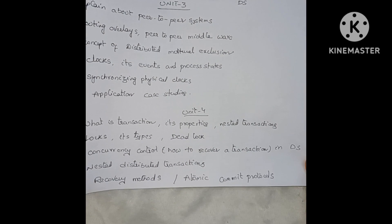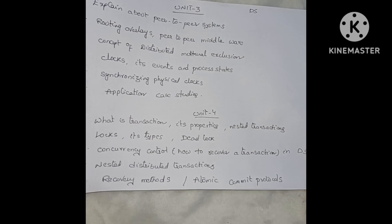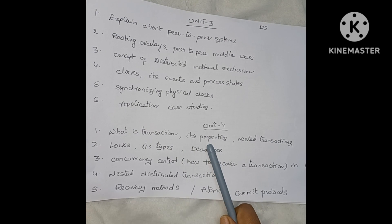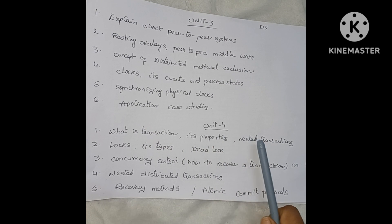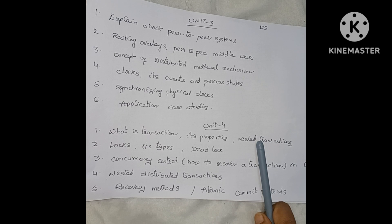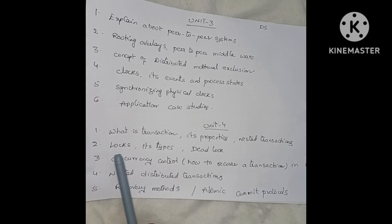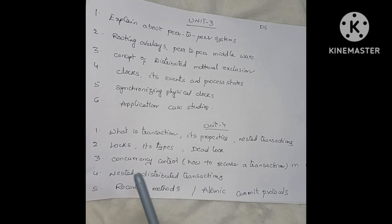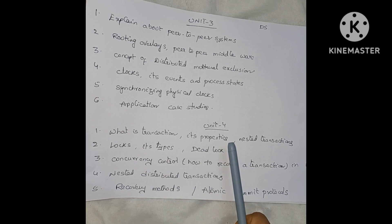Unit 4 questions are similar to DBMS concepts we already know. What is a transaction and what are its properties? Explain nested transactions. Next, locks — what is a lock, the different types of locks, and the concept of deadlock, which is very very important. This includes how to remove deadlock and deadlock methods.